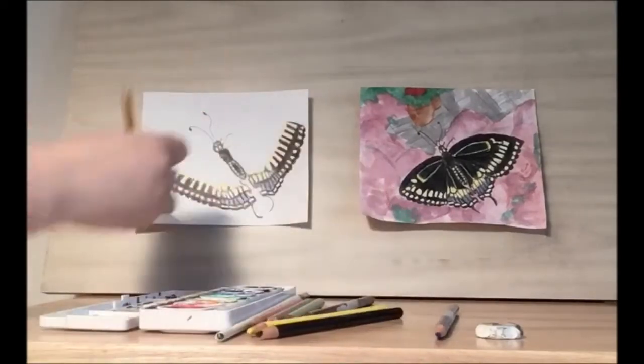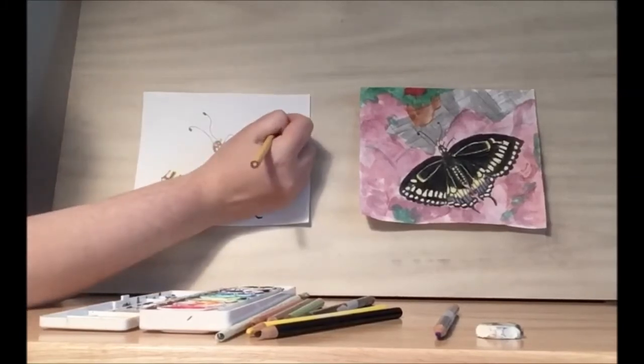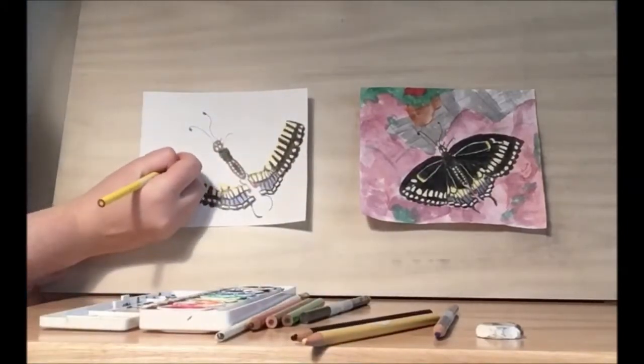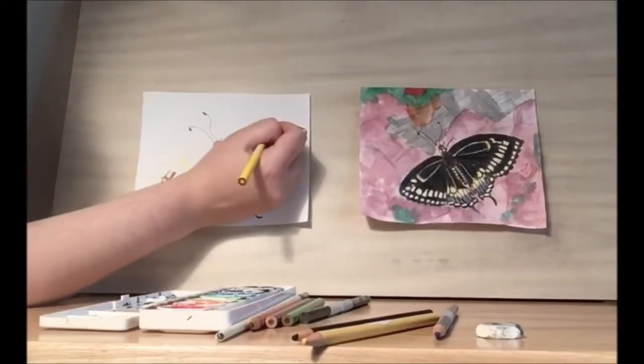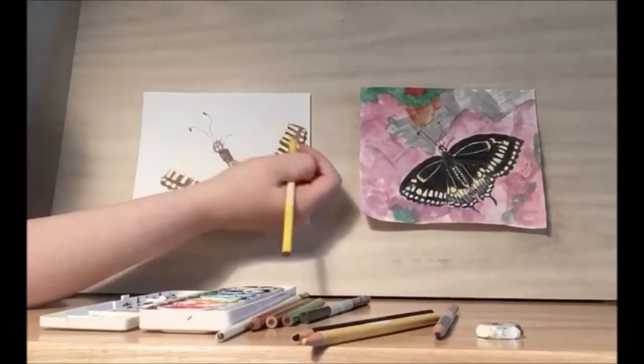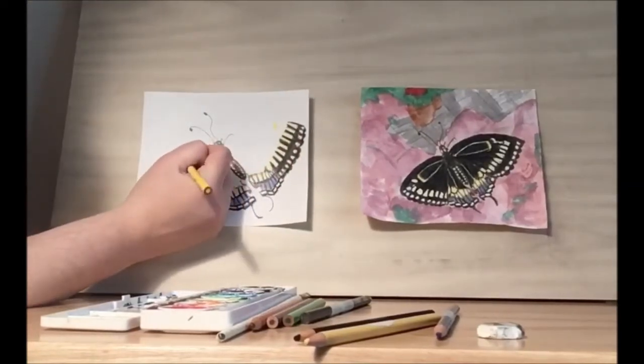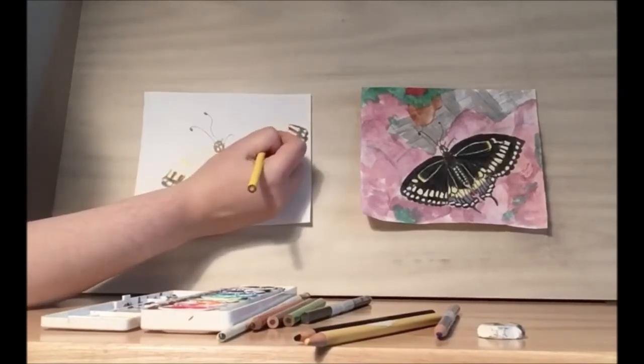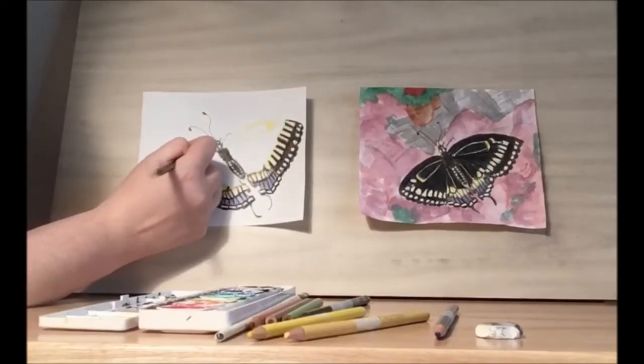And then we need to draw a dot here and a dot here. And then we'll use the yellow to make the edge of the wing design. And then we'll draw wings, draw the inside.